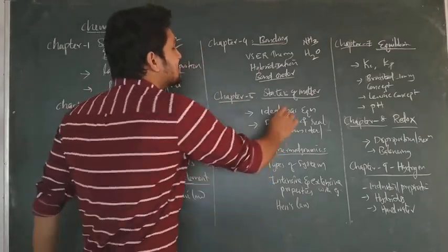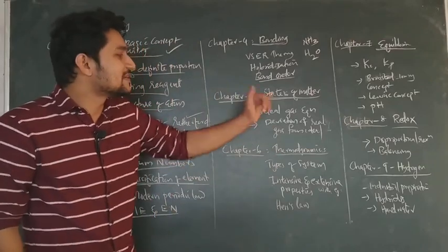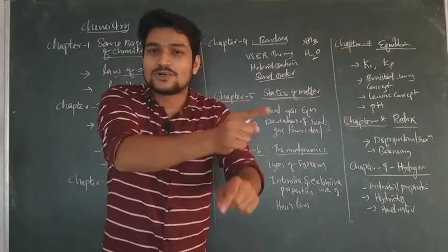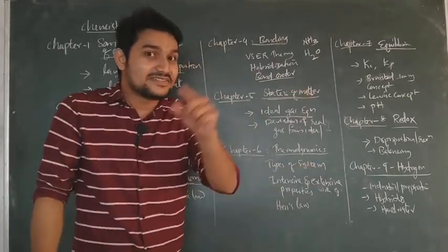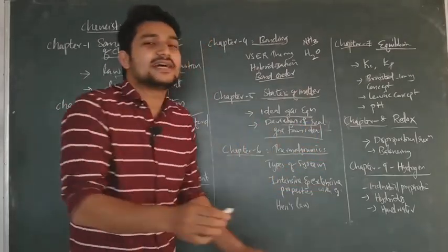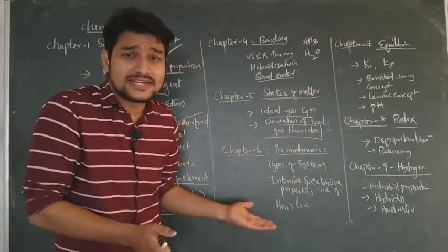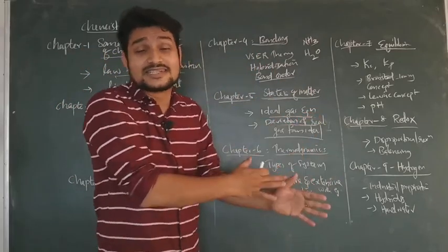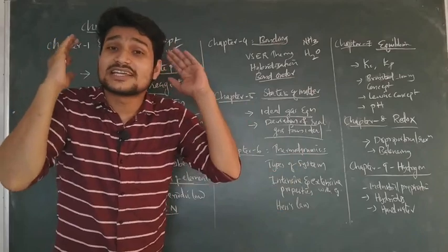Then we will learn the states of matter. In chapter 5, we will learn the ideal gas equation. Then we will learn the derivations, and the deviations of real gas from ideal behavior — the van der Waals equation for real gases.